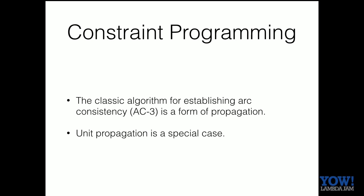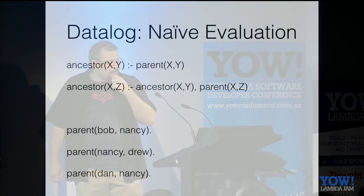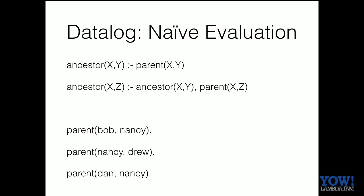Another example that leaps out is datalog. Datalog is like bottom-up Prolog where atoms are basically tables. I have a parent table and an ancestor table. I'm saying if x is a parent of y, then x is an ancestor of y; and if x is an ancestor of y, and y is a parent of z, then x is an ancestor of z. I have a bunch of starting facts, and then this gives me rules that I iterate on until it reaches a fixed point.